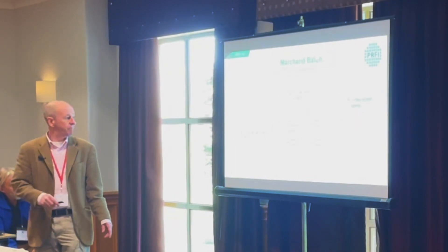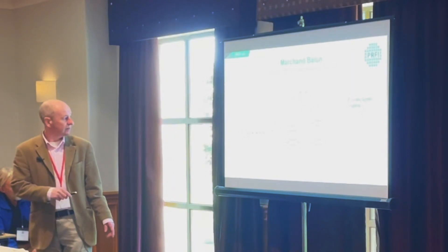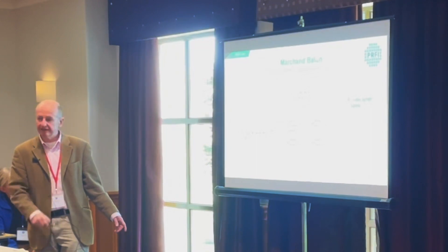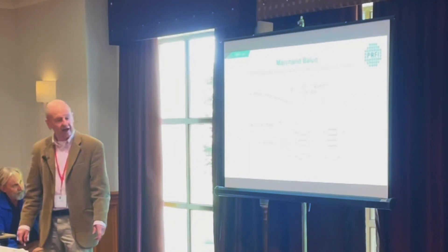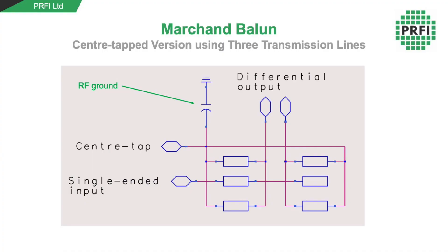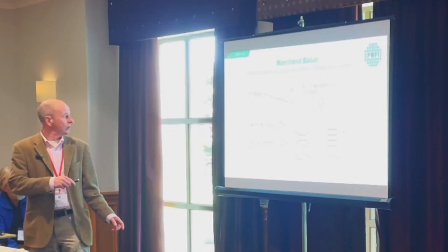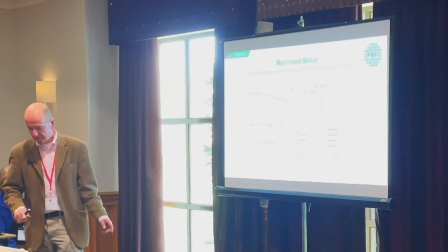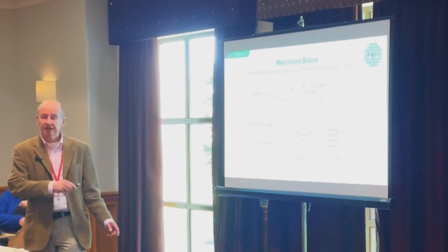We can get better coupling by using multiple coupled lines, giving tighter coupling. The structure starts to look a bit more like a coaxial cable, with the outer and inner conductors replicated. For the RF balun, we always tend to extract the IF from the RF side, mainly because the LO signal is much bigger and you'd get more leaking through from the LO side. On the RF side we have this RF ground, and we can extract the IF from it, so long as the capacitor is a good RF short.